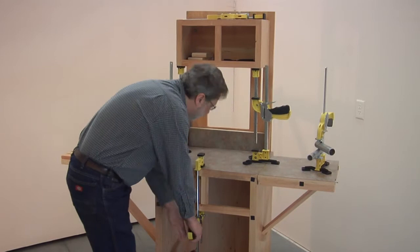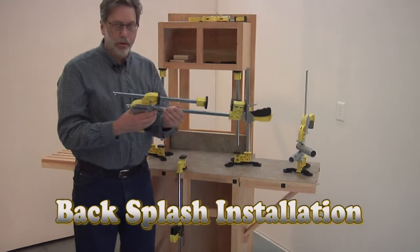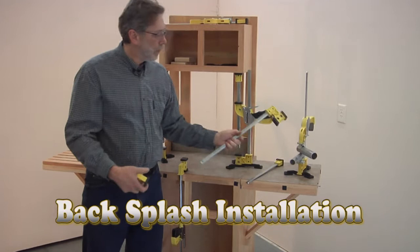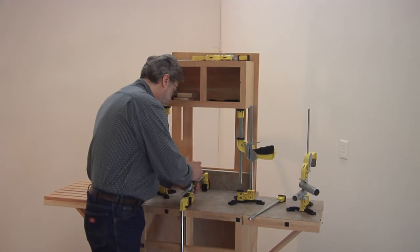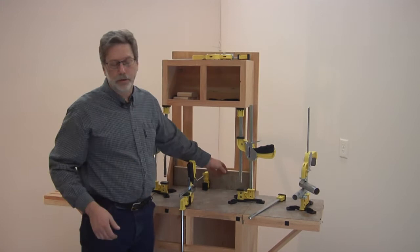We are going to take a second clamp, remove the top bar, put the bottom bar in backwards. So now we have a spreader without the top bar, and then we are going to push against the clamp that we have already clamped down, and now you can push the backsplash against the wall until the glue dries.